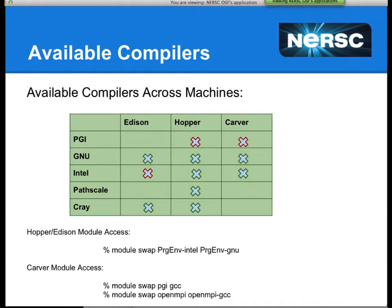To swap between compiler environments, you would use the module swap command — for example, swapping from PRG_ENV_Intel to PRG_ENV_GNU if you had Intel loaded but want to use GNU. On Carver, it's a little different: you need to swap from PGI to GCC, and also swap OpenMPI to OpenMPI_GCC. That will cause MPIF90 to point to the relevant GNU version instead of the Intel version.